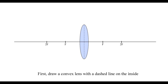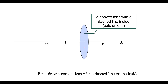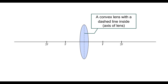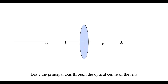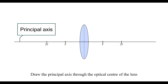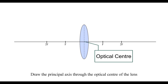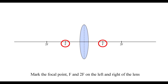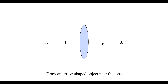First, draw a convex lens with a dashed line on the inside. Draw the principal axis through the optical center of the lens. Mark the focal points on the left and right of the lens. Draw a narrow-shaped object near the lens.